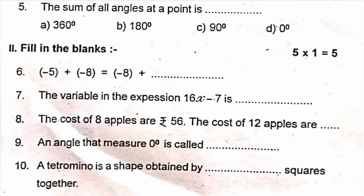Question 8: the cost of 8 apples is rupees 56; the cost of 12 apples is dash. 8 apples cost 56 rupees, so find the cost of 12 apples — first find the cost of 1 apple, then find 12 apples. Question 9: an angle that measures 0 degrees is called dash. Question 10: a tetromino is a shape obtained by joining dash squares together.